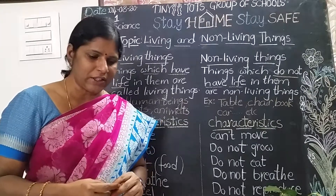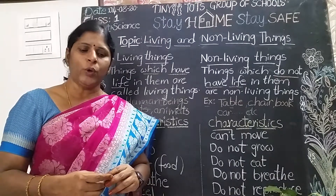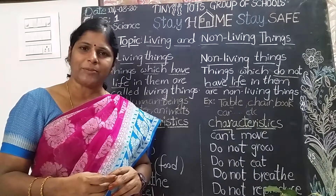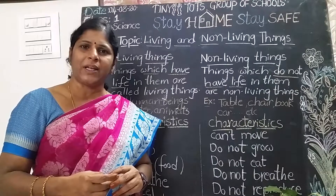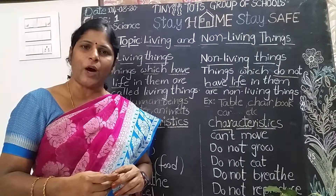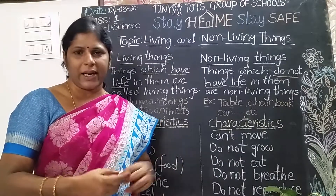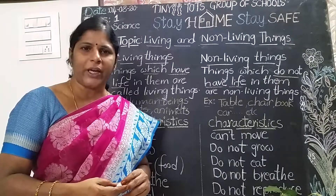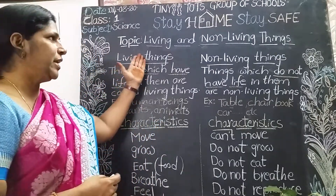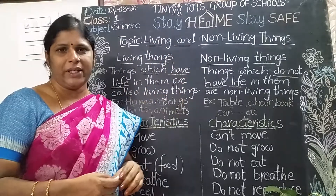Among these things, there are two types: living things and non-living things. Let us learn what they are — they are living things and non-living things.